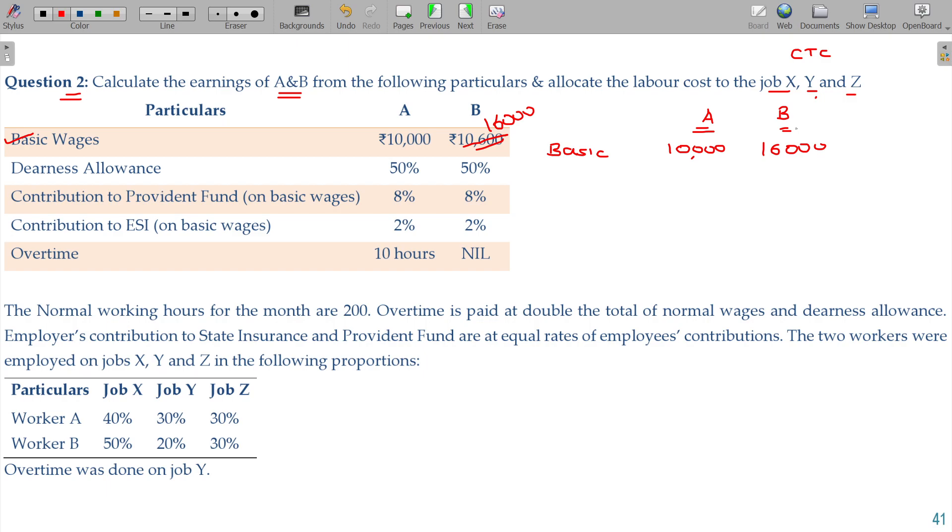Then dearness allowance being 50 percentage of that DA. 5,000 for A. 8,000 for B. Contribution to PF and ESI. 8 and 2 percentage on basic. PF and ESI. 10,000 or 10 percentage on the 1,000. Here being 1,600.